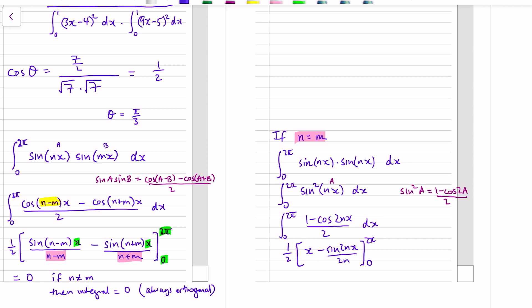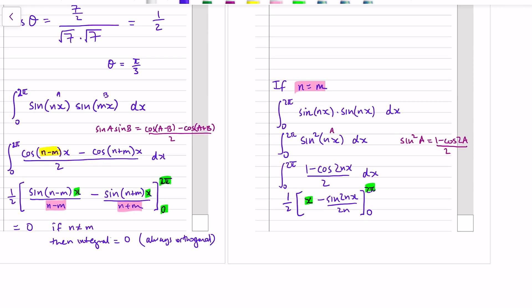Okay, now we sub in the limits. Well if we sub in 2 pi and n and m are integers, we're subbing in 2 pi into there and into there. We've got sine of a multiple of 2 pi which is 0, and if we sub in the bottom limit of 0 we've got sine of 0 so all of that disappears and it equals 0. So what that tells us is if n doesn't equal m, then this integral equals 0, so orthogonal always.